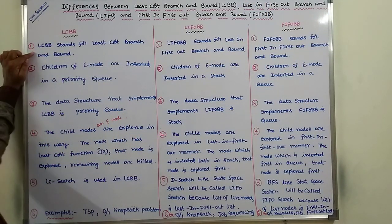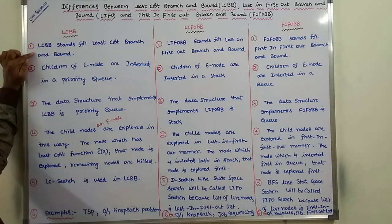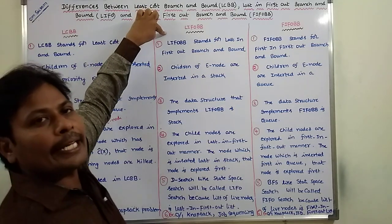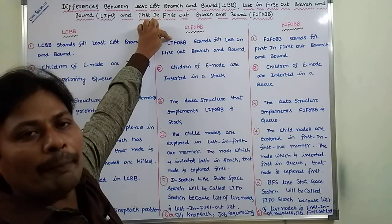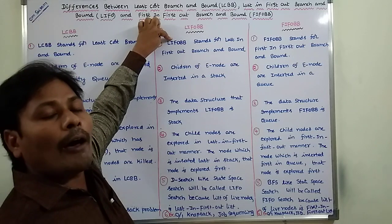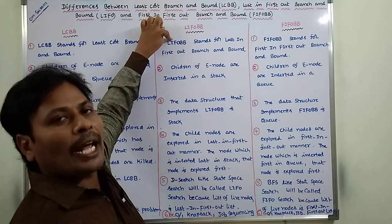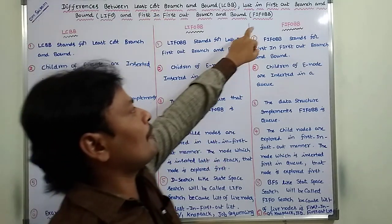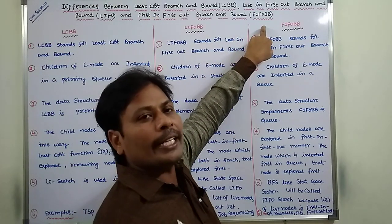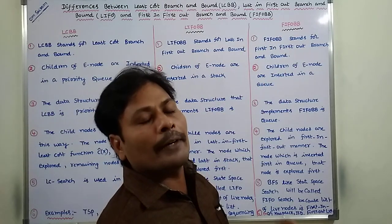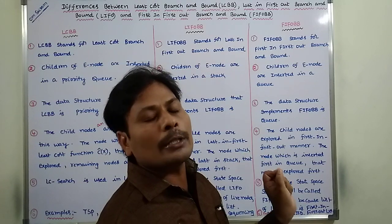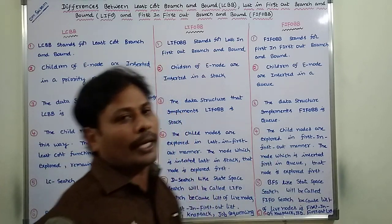LCBB stands for least cost branch and bound. LIFOBB stands for last in first out branch and bound. FIFOBB stands for first in first out branch and bound.